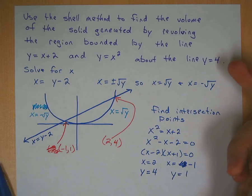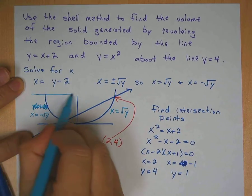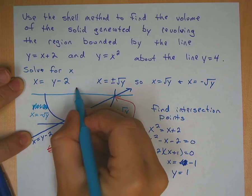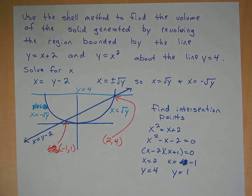Since we're revolving around the line y equals 4, which is this line, we are going to have to solve our equations for x because this is going to be an integral with respect to y.